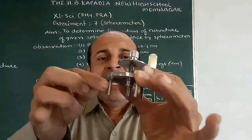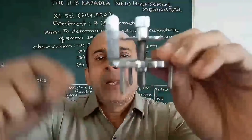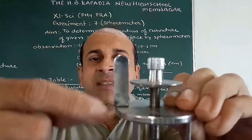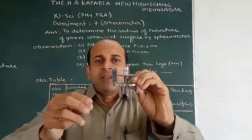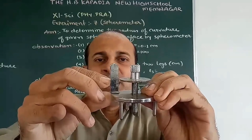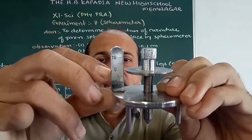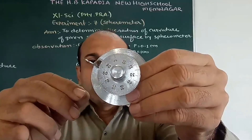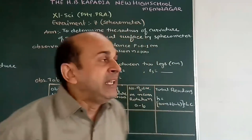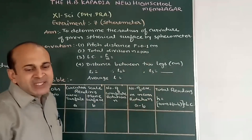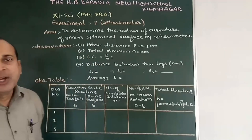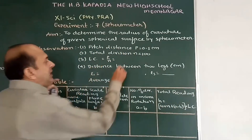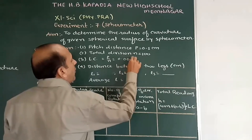The spherometer has three legs with a circular scale and a vertical scale. The vertical scale is called the main scale, and the distance between two divisions is 0.1 cm. So the pitch distance is 0.1 cm, and the total number of divisions on the circular scale is 100. Therefore, the least count of this instrument is 0.1 divided by 100, which equals 0.001 cm.